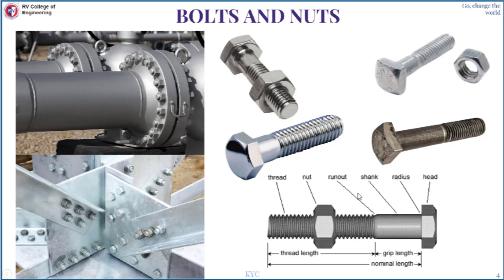Now we will go to the nomenclature of the bolt and nut. In the head portion this is the hexagonal head — there are six sides, but only three sides are visible in the front view. The nominal length is the length of the bolt. We also have the grip length, which is the region where the metallic objects are held together. The thread portion, runout, shank, and radius are also labeled. So the key terms are thread length, nominal length, and grip length.